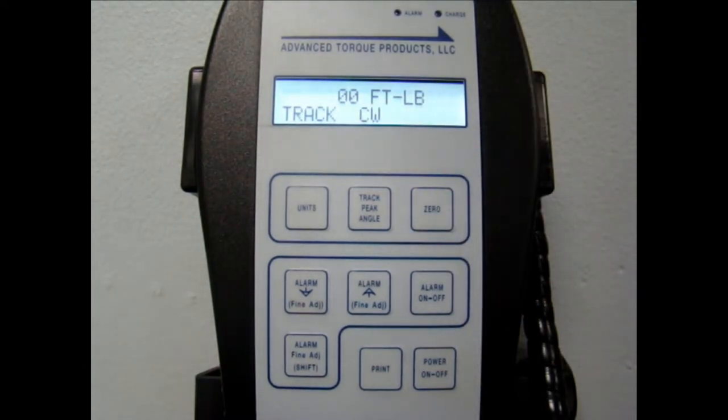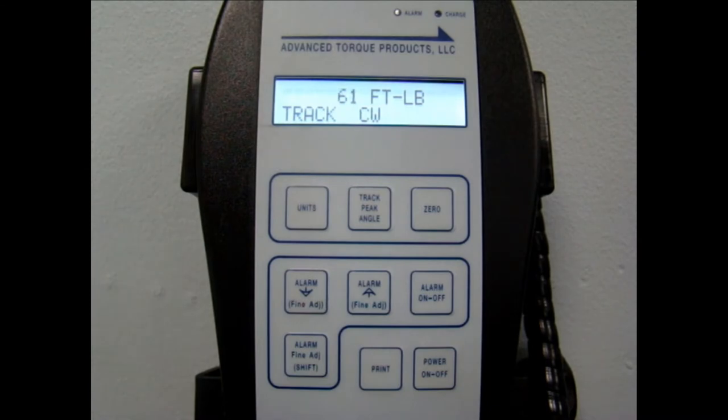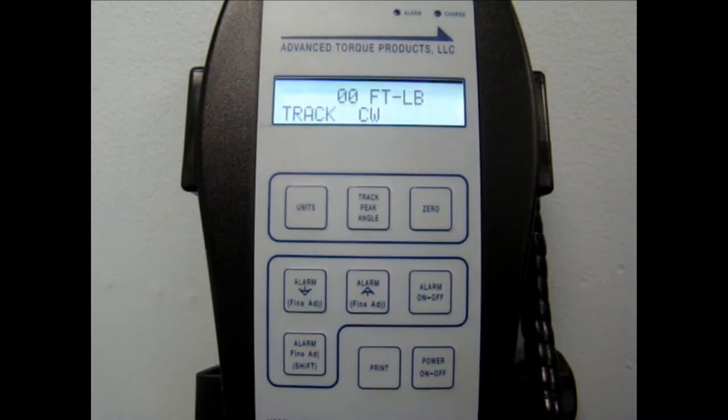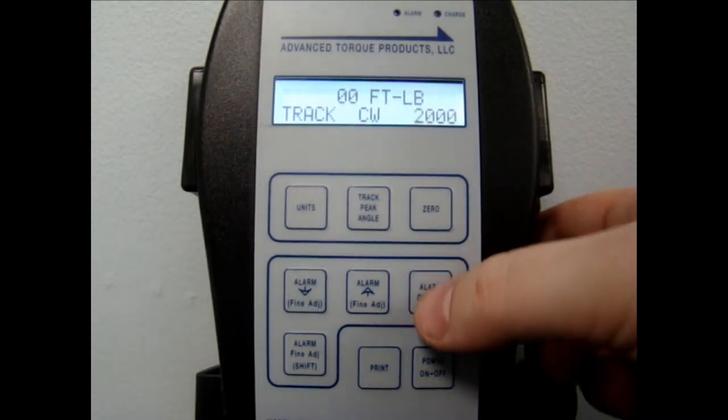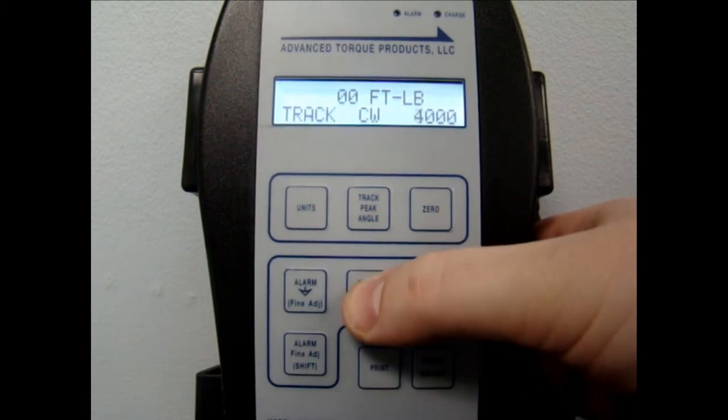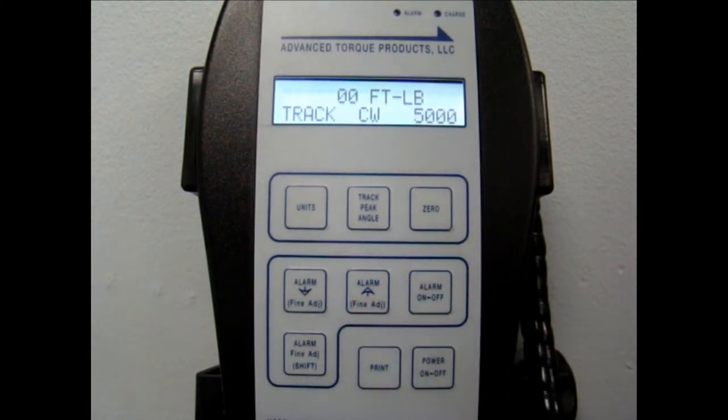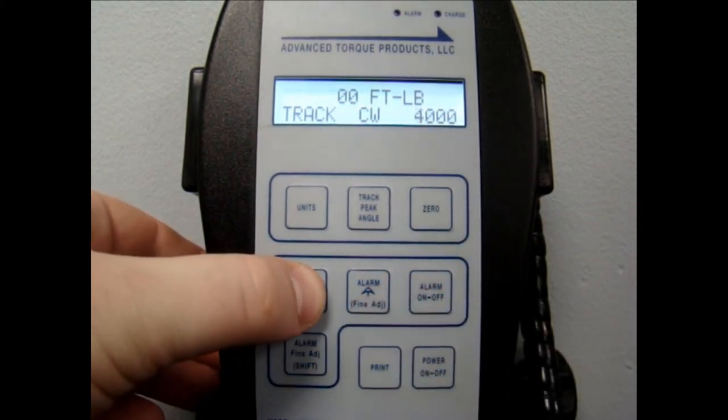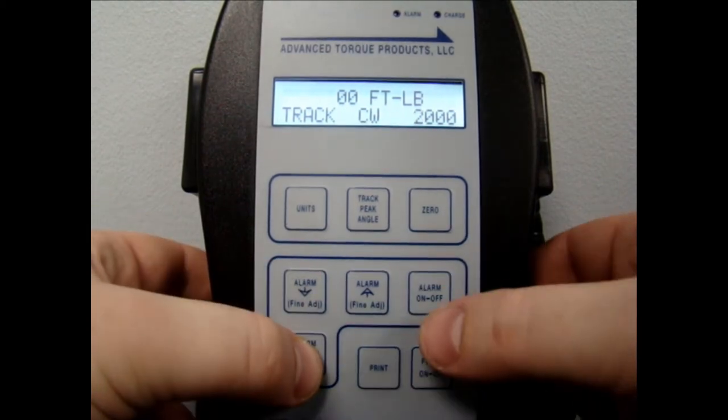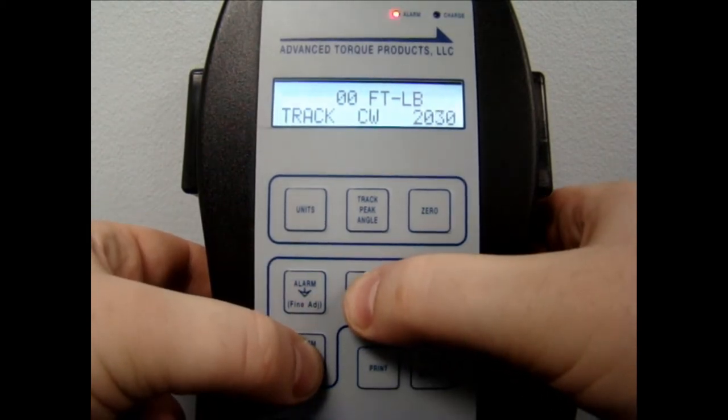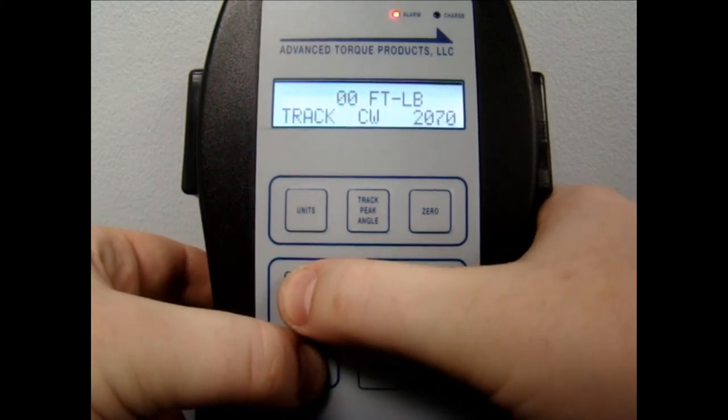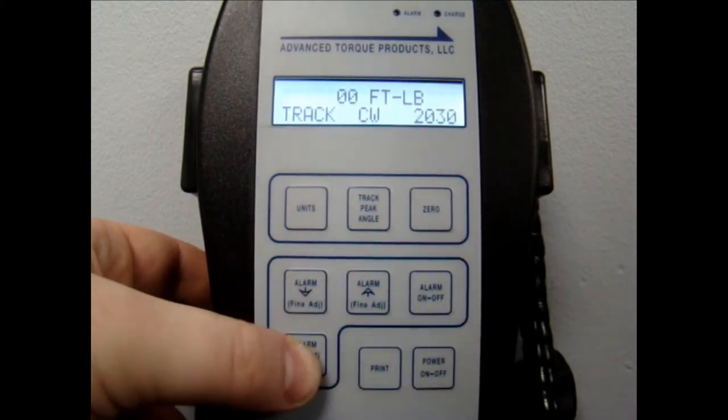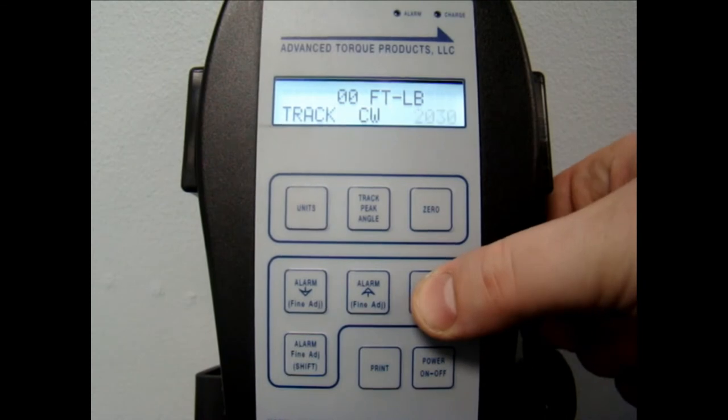The zero button zeros the display and should be pressed before torquing any application. The next four buttons are all related to the multiplier's alarm feature. The first two adjust the alarm up and down. The fourth button, if held down, allows you to adjust the alarm in finer increments. The third turns the alarm on and off.